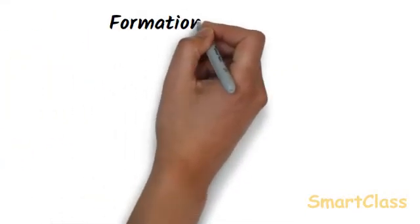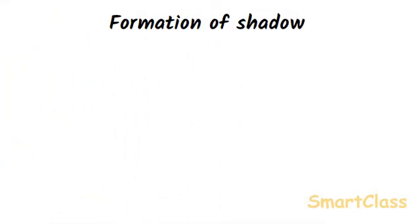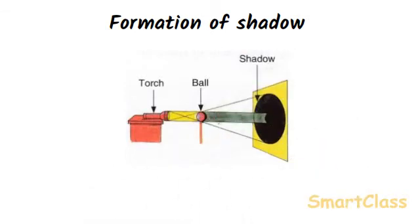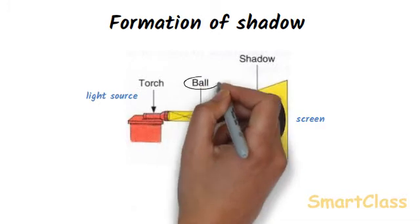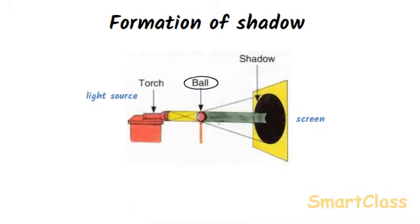Let us now understand how the formation of a shadow takes place. If we take a torch and light it in a dark room, the torch will act as a source of light. A sheet of white cardboard held vertically in front of the torch at some distance will form a screen. Now, if we hold a ball in front of the torch between the torch and screen, a shadow of the ball will be formed on the cardboard. The ball acts as an obstacle in the path of light, and the shadow is formed on the cardboard screen.